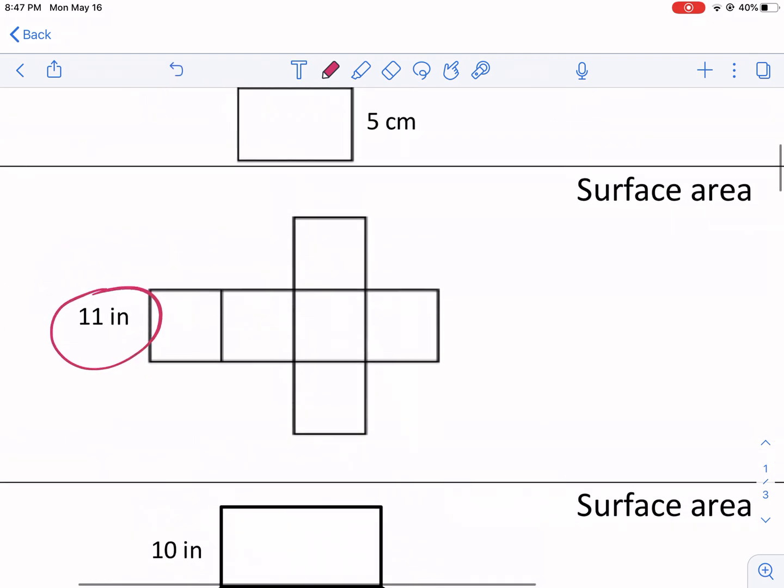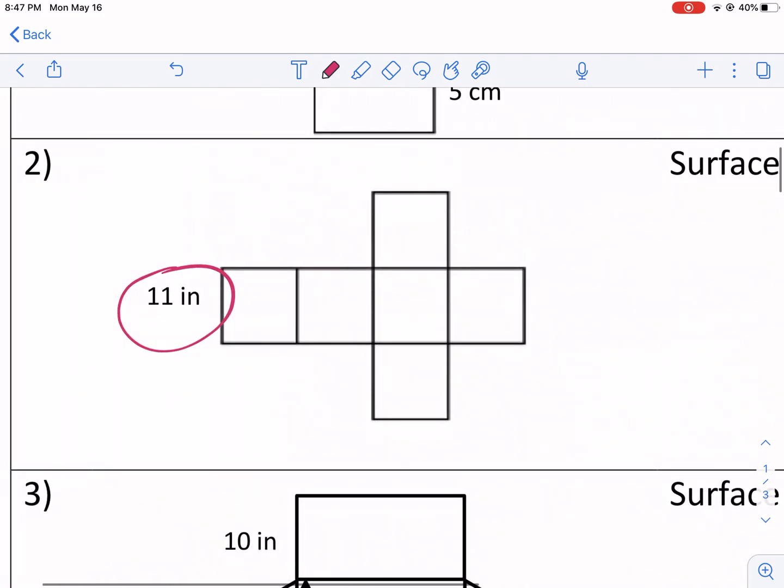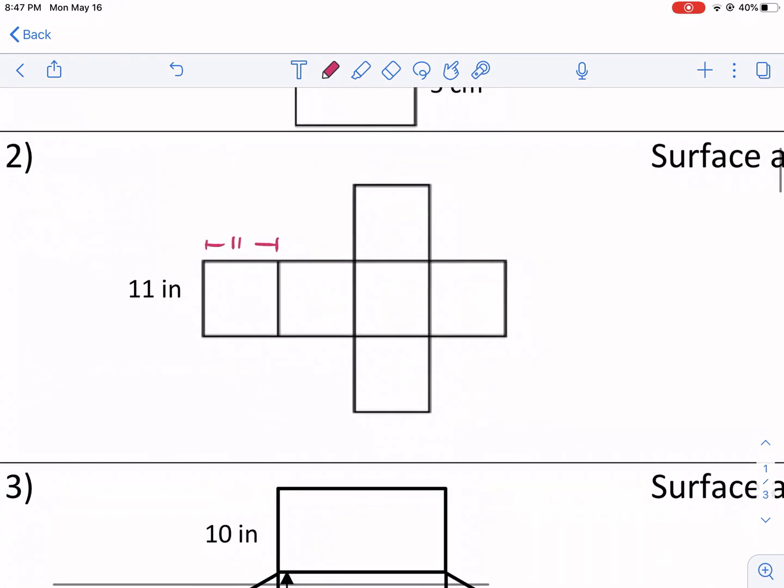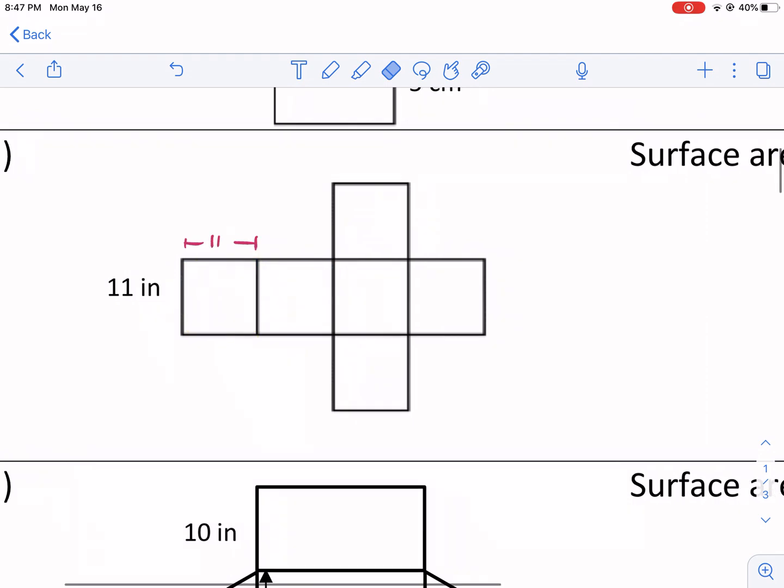Now it only gives us one measurement here, 11 inches, and we're going to have to assume that all these measurements are 11 inches. And as you can kind of tell based on just the appearances of each one of these rectangles, that they're squares, which makes this a cube.